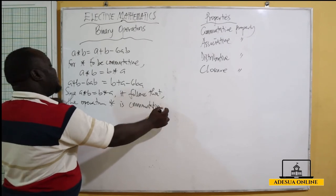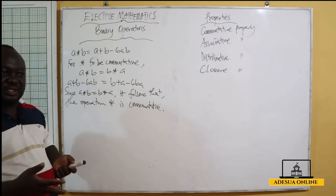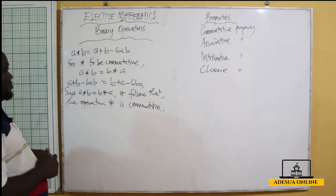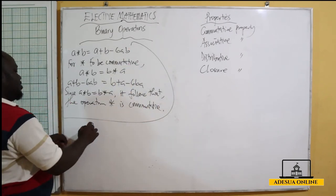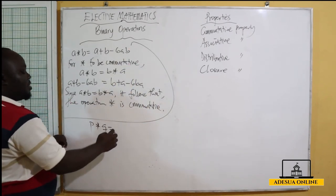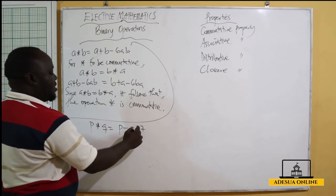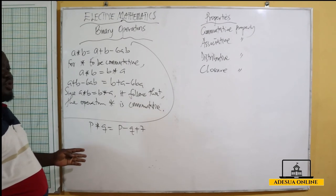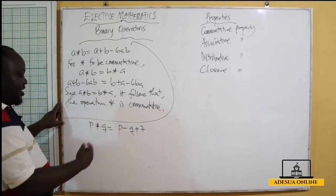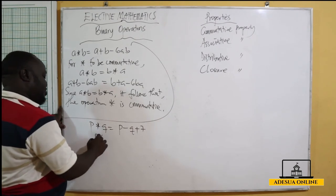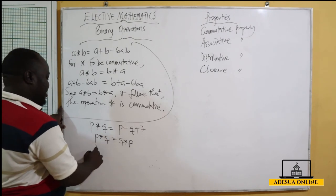Since a★b equals b★a, we can say the operation is commutative. Now let's take another example. Suppose p★q = p − q + 7. We are asked to show whether or not this operation is commutative.